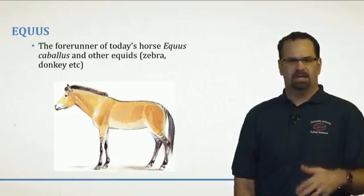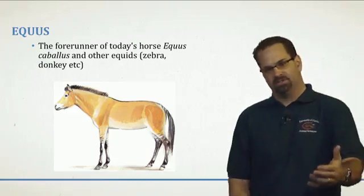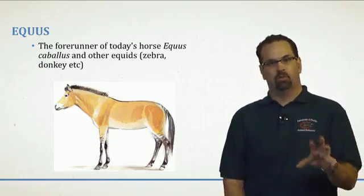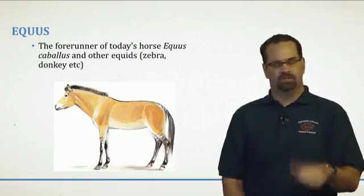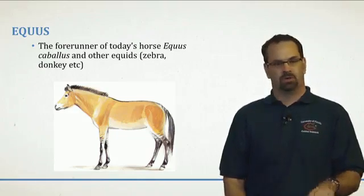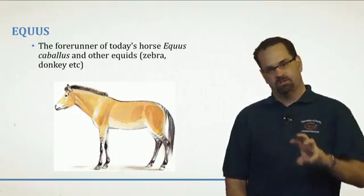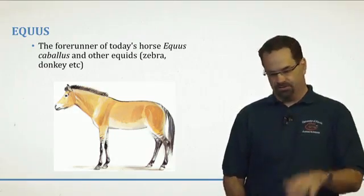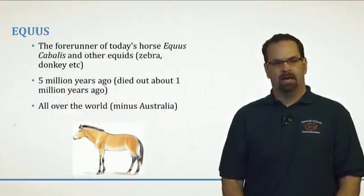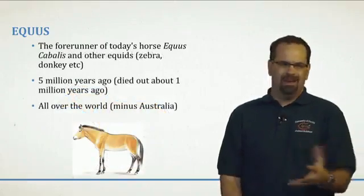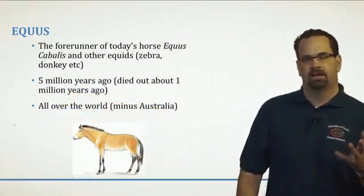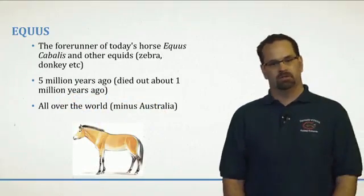Now we jump ahead to Equus. Equus is actually the forerunner for today's donkeys, zebras, and horses — they all trace back to Equus, which is where we get that family name. They evolved about five million years ago and died out about a million years ago. These were animals found all over the world except Australia.